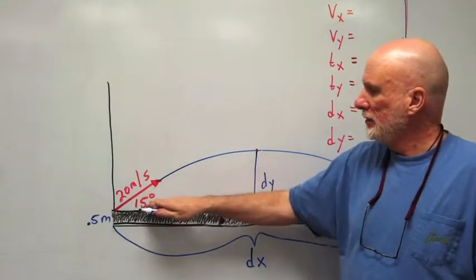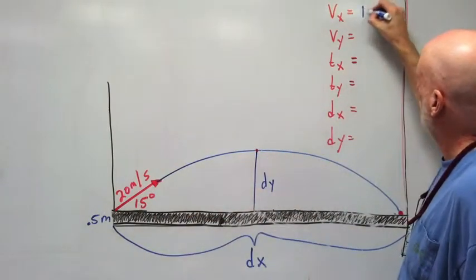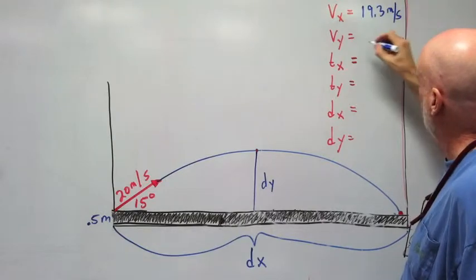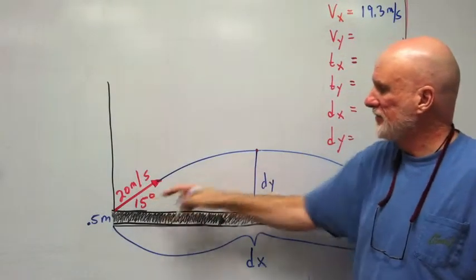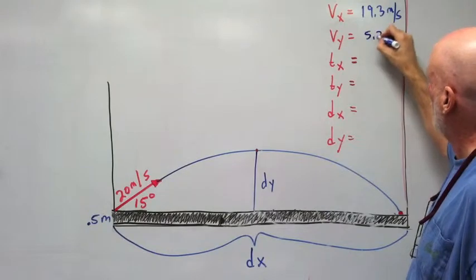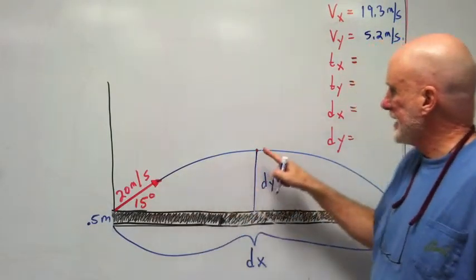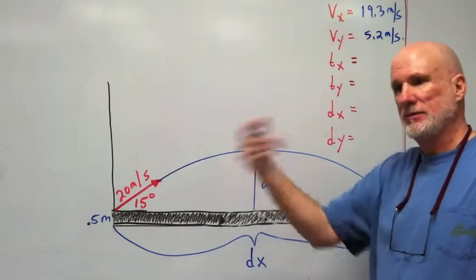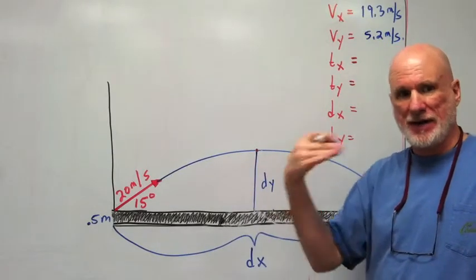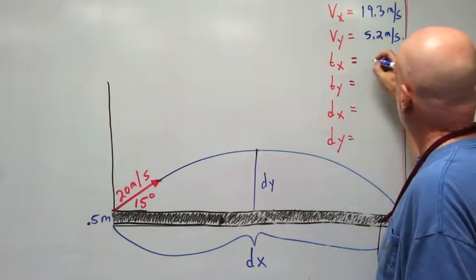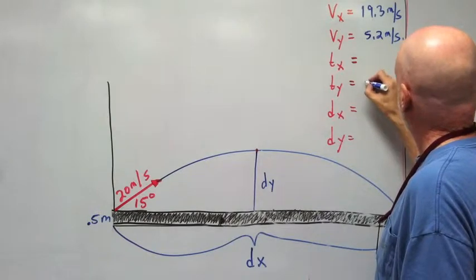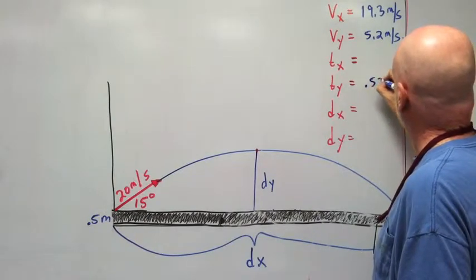20 cosine 15 equals 19.3 meters per second. 20 sine 15 equals 5.2 meters per second. Time it takes to get to d max, velocity divided by g, is going to be 0.52 seconds.